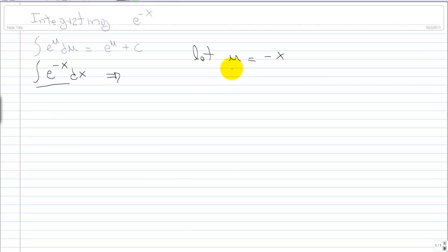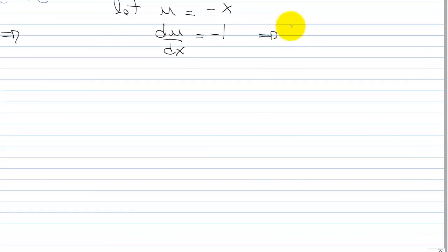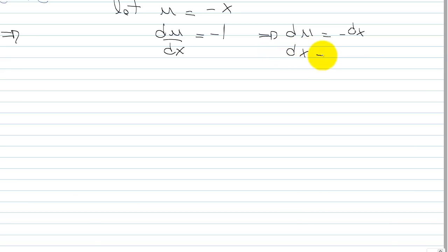And then differentiate u: du over dx is equal to negative 1. This means that du is equal to negative dx, or dx is equal to negative du.